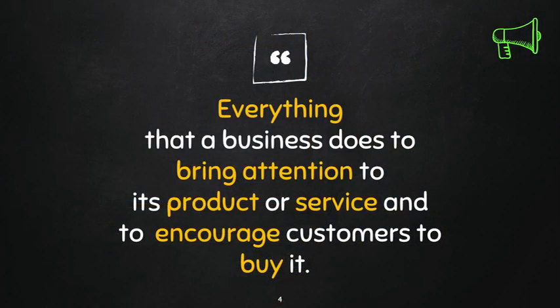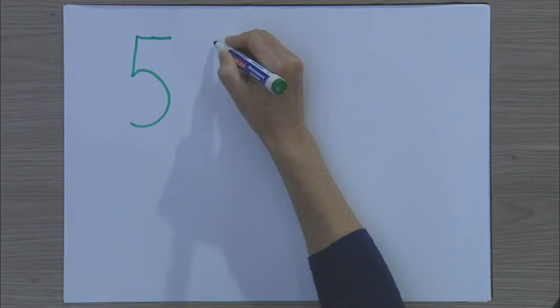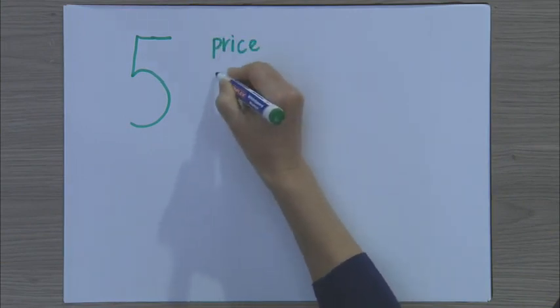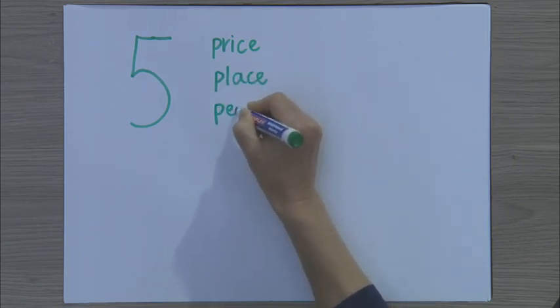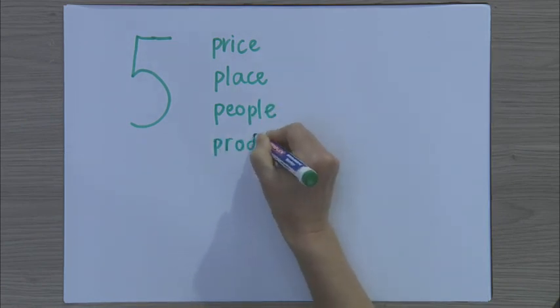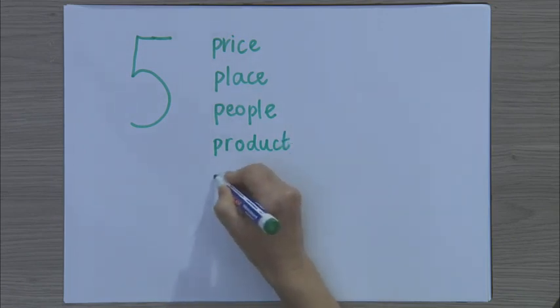When we're looking at marketing, we need to remember the five P's of marketing. The five P's are: price, place, people, product, and the last one is promotion.